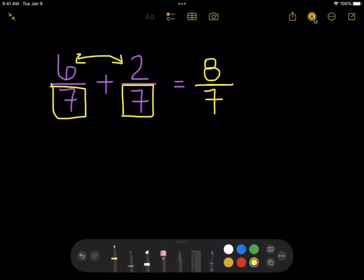Now, this answer is what we call an improper fraction. That means that the numerator is greater than the denominator, and that tells us that what we have is a whole number plus another fraction piece, so we're going to turn eight sevenths into a mixed number.